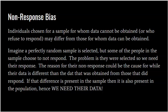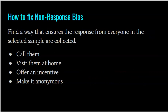To fix non-response bias, find a way that ensures responses from everyone in the selected sample are collected. Maybe you call them, visit them at home, or offer an incentive. For example, a mail-in radio survey once included a $5 bill with the promise of $20 upon return — and it worked. As long as the incentive doesn't impact what someone will answer, it's a valid way to get a response. Making the survey anonymous can also help, especially if you're asking about something embarrassing or sensitive.